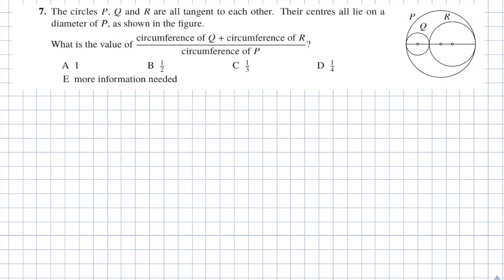Question 7. Circles P, Q, and R are all tangent to each other. Their centres all lie on a diameter of P, as shown in the figure. What is the value of (circumference of Q plus circumference of R) divided by the circumference of P? Answers: A is 1; B is a half; C is a third; D is a quarter; and E is more information is needed.